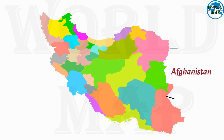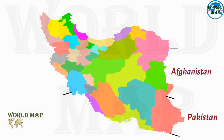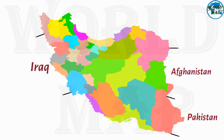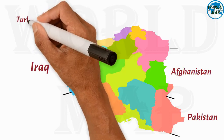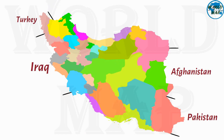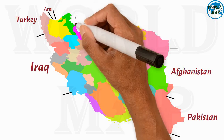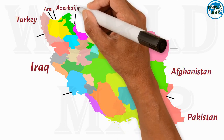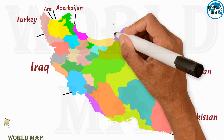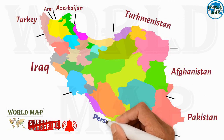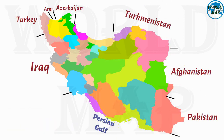Iran is bounded to the east by Pakistan and Afghanistan, to the west by Turkey and Iraq, to the north by Azerbaijan, Armenia, and Turkmenistan, and to the south by the Persian Gulf and the Gulf of Oman, and to the north by the Caspian Sea.